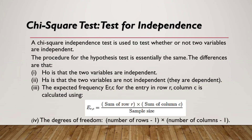Next we have the chi-square test for independence. This test is used to determine whether or not two variables are independent. The null hypothesis H₀ is that the two variables are independent; the alternative Hₐ is that they are dependent. The expected frequency E_rc for row r and column c is: (row r sum × column c sum) / sample size. Degrees of freedom = (rows − 1) × (columns − 1).